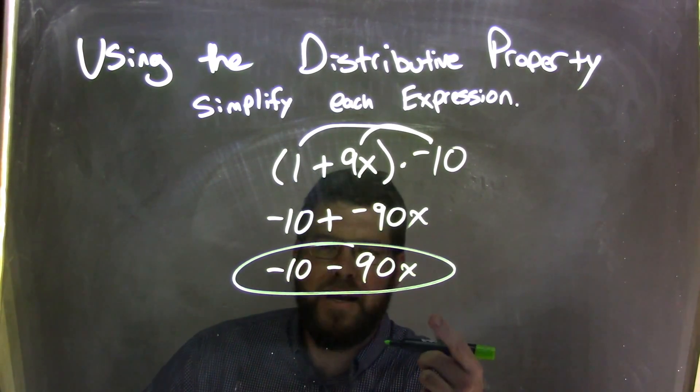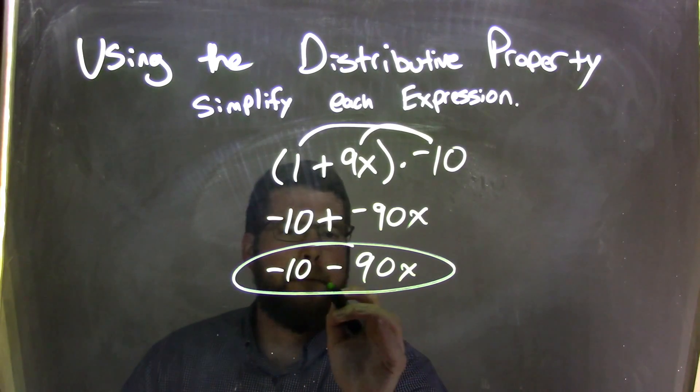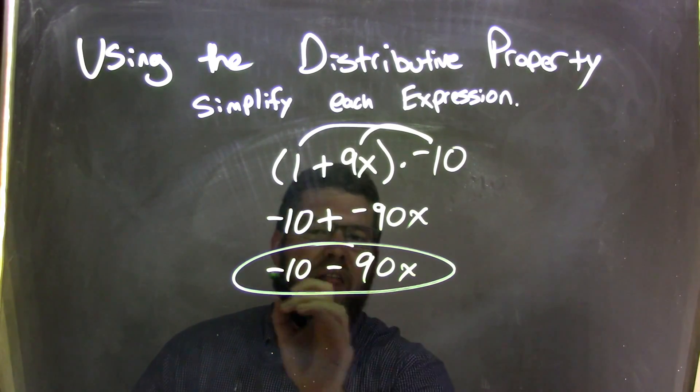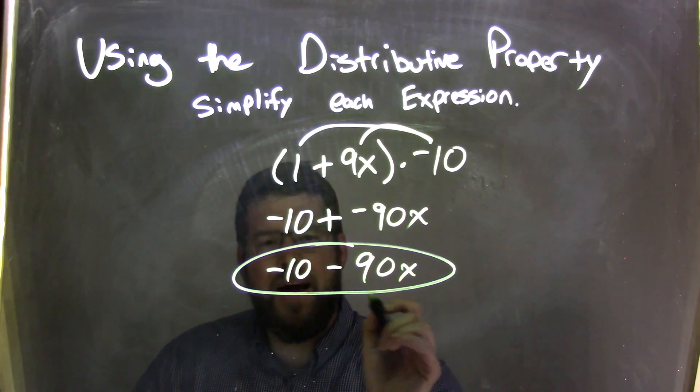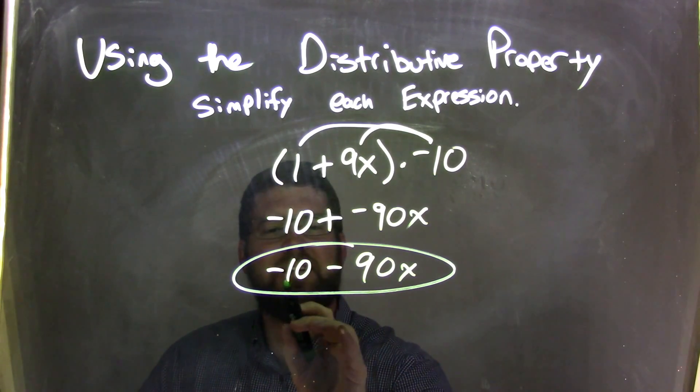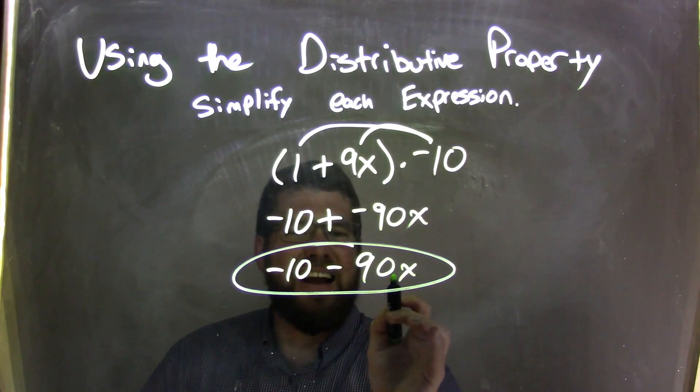Make it cleaner. Make it neater. Make it nicer. Negative 10 minus 90x. They are not like terms. Cannot combine them. So again, our final answer here is negative 10 minus 90x.